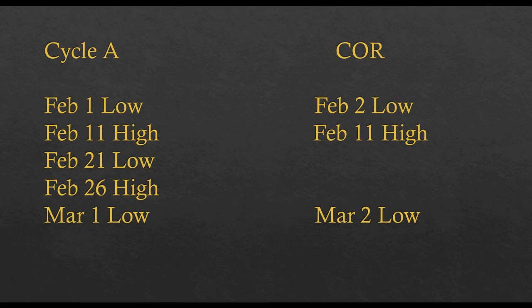Here are the dates: February 1 low, February 11 high, February 21 low, February 26 high, March 1 low. Write those down along with the COR dates. Notice we go low, high, low, high, low — and the COR also has to go low, high, low, high, low, high. That is never broken. The COR never ever pivots by itself — it always pivots with cycle A, no exception.